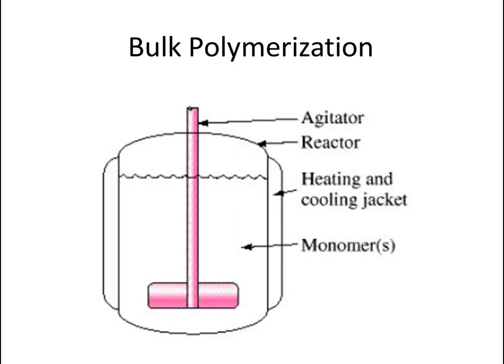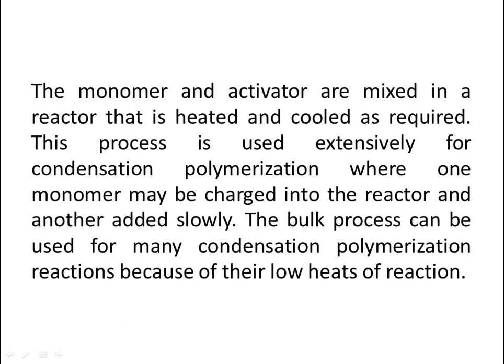Now let's talk about bulk polymerization. There is a figure showing an agitator, a reactor for making plastic, and a heating and cooling jacket, with monomers present. The monomer and activator are mixed in a reactor that is heated and cooled as required. This process is used extensively for condensation polymerization, where one monomer may be charged into the reactor and another added slowly. The bulk process can be used for many condensation polymerization reactions because of the low heat of reaction.